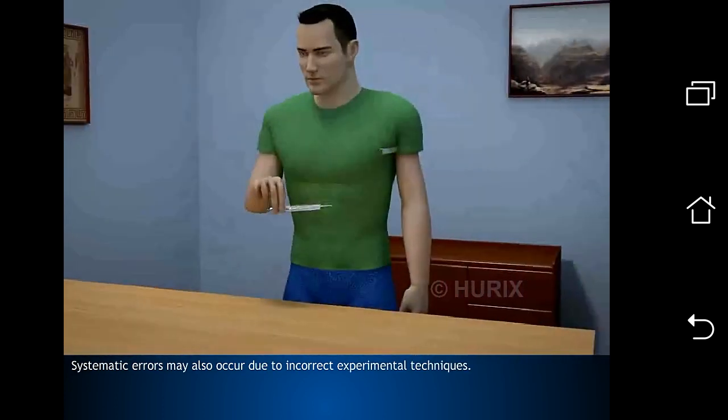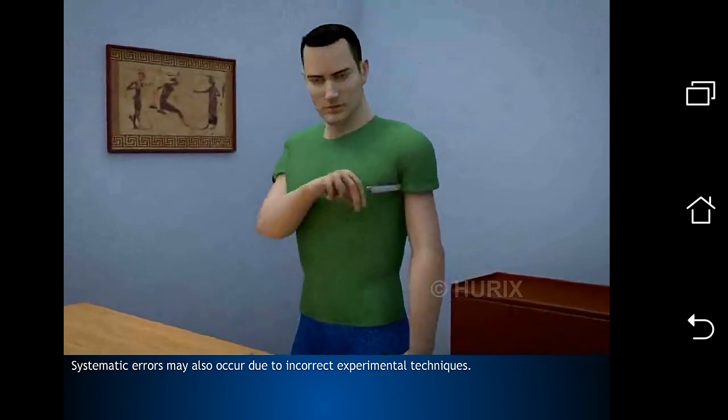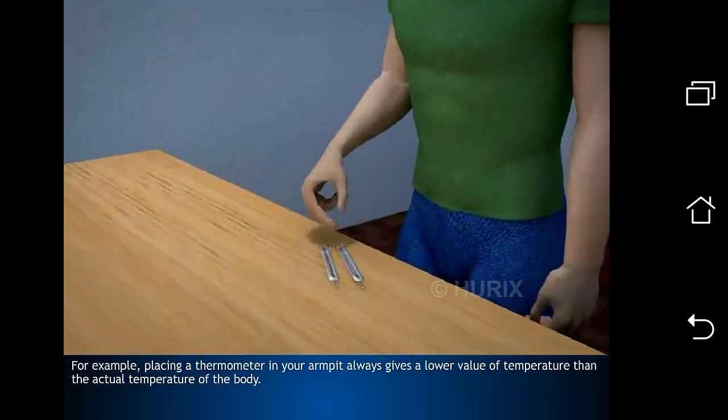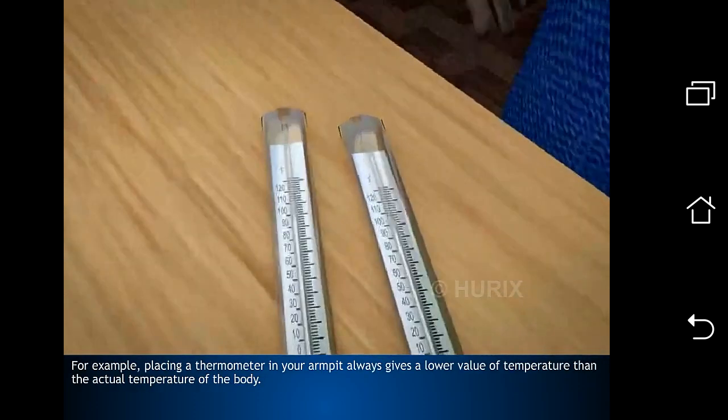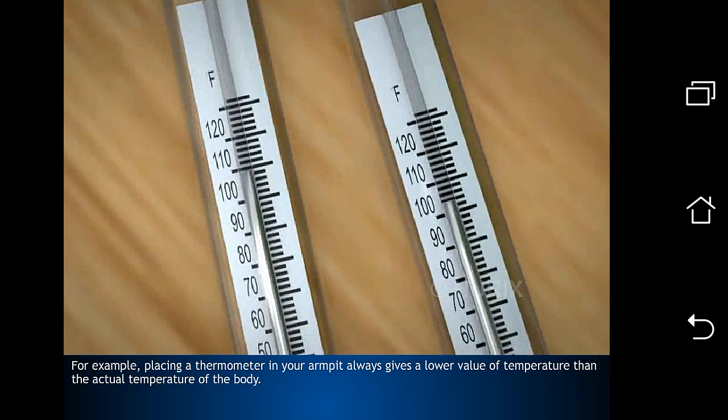Systematic errors may also occur due to incorrect experimental techniques. For example, placing a thermometer in your armpit always gives a lower value of temperature than the actual temperature of the body.